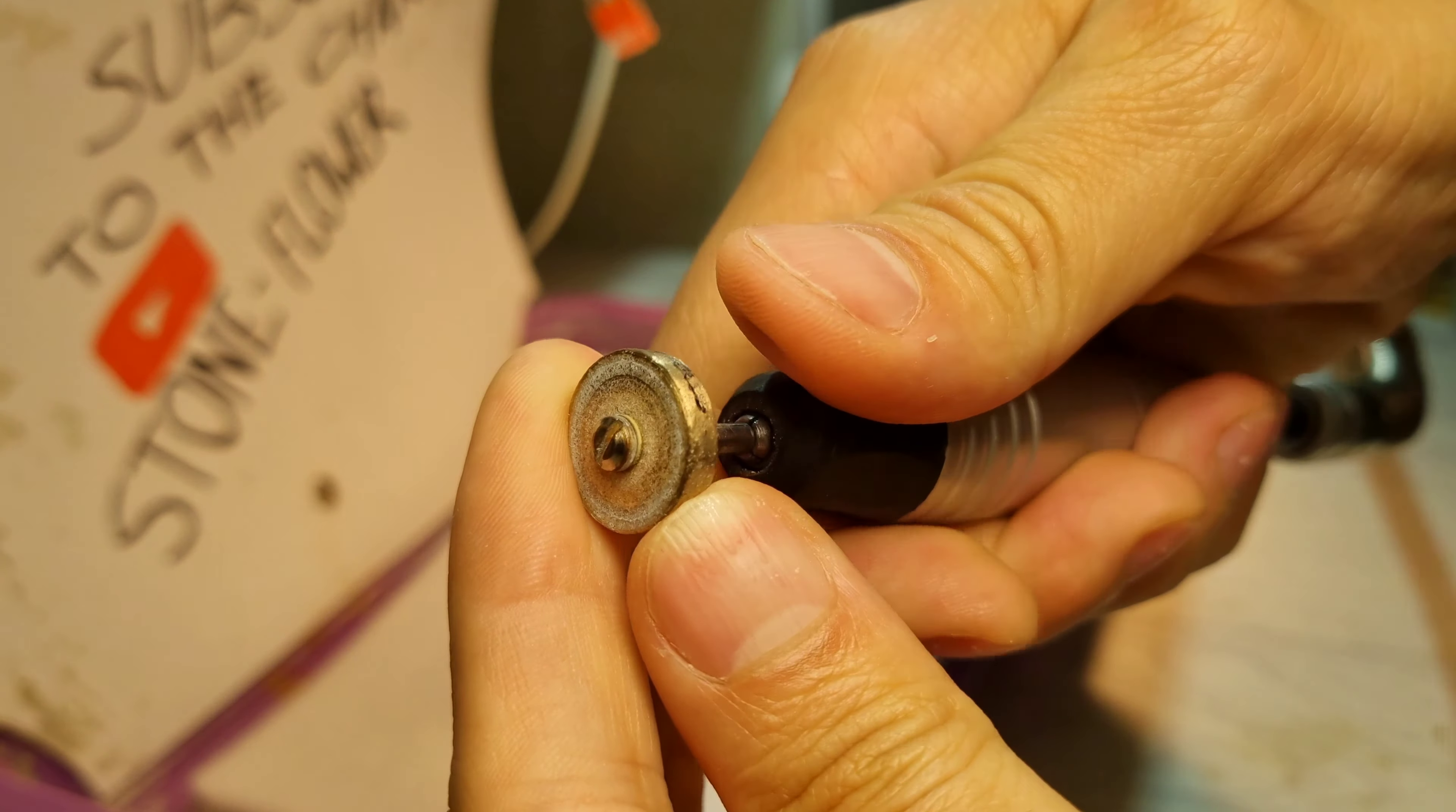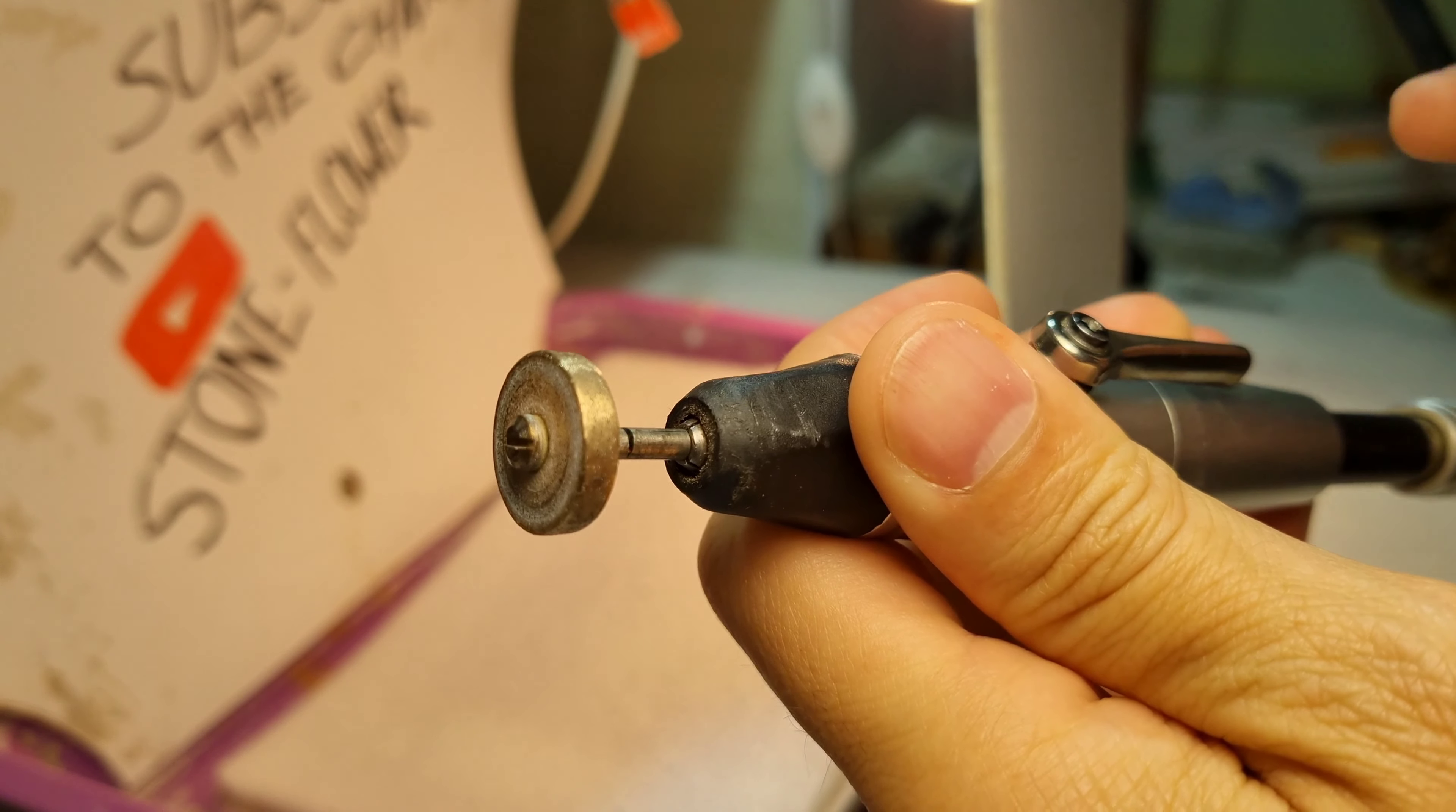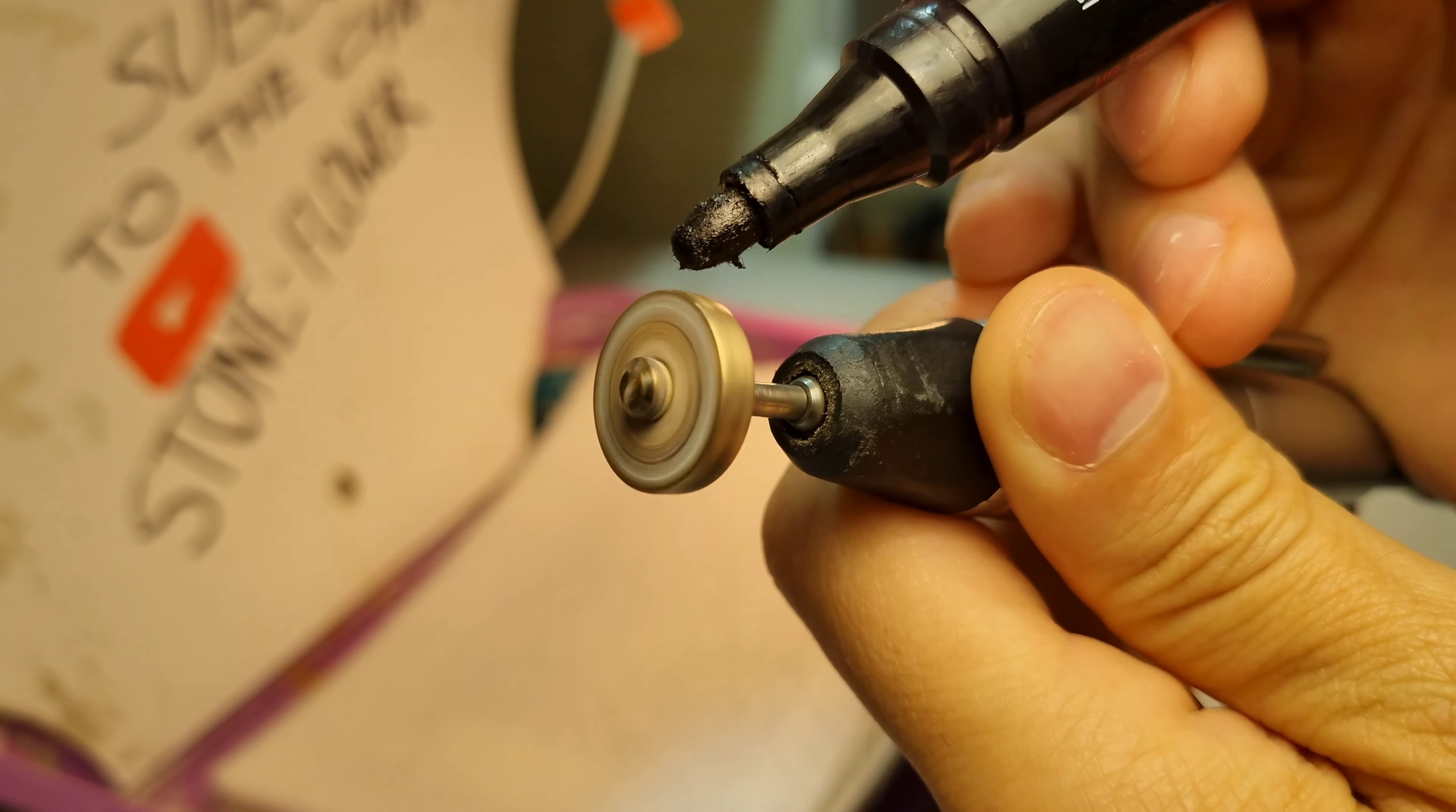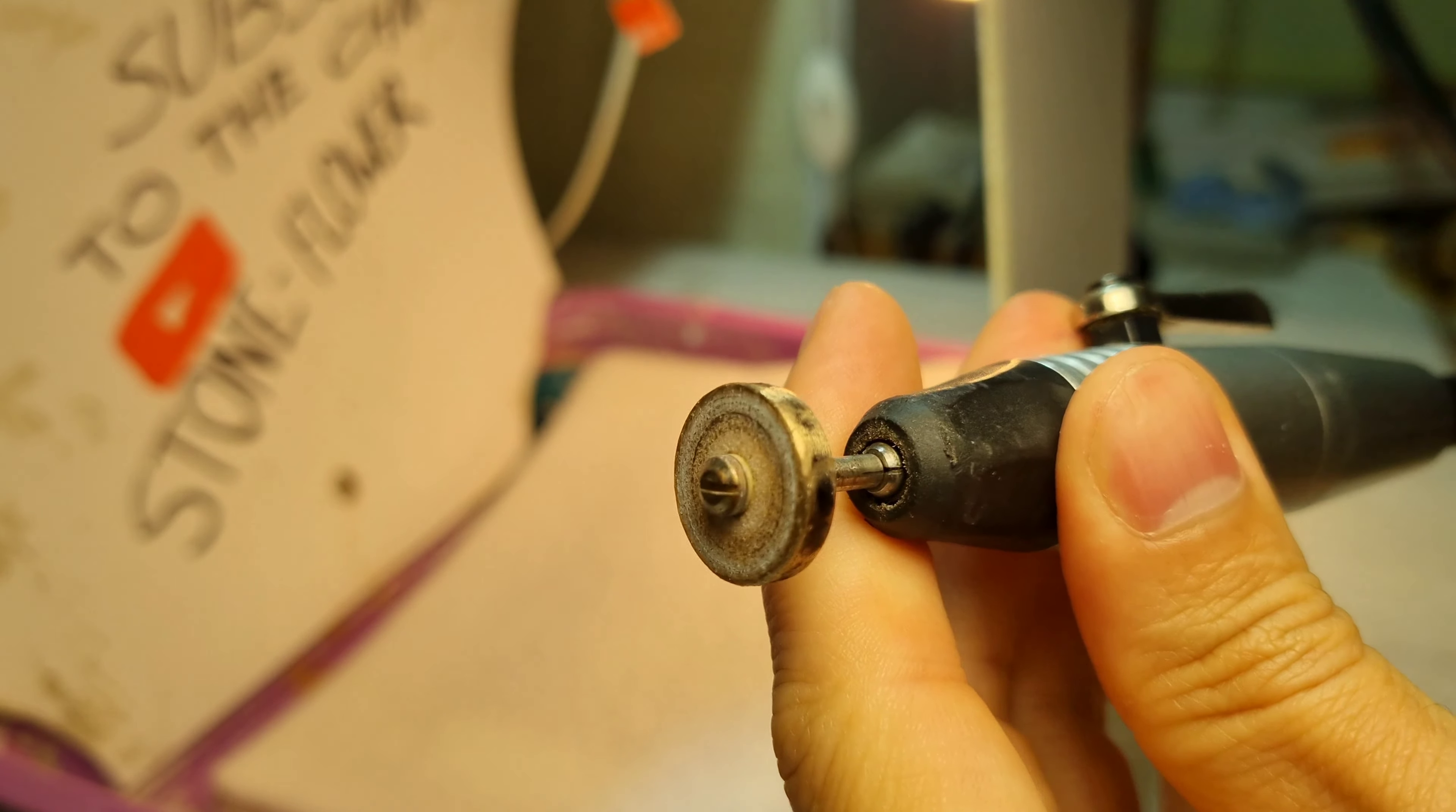You can press with a finger or other object. Now once again we touch the felt tip pen with a diamond wheel. We see that there are more spots from the felt tip pen.